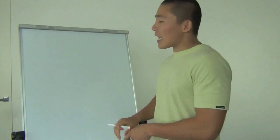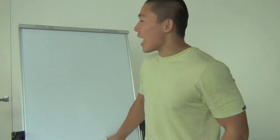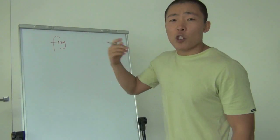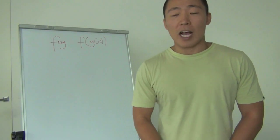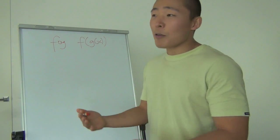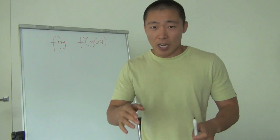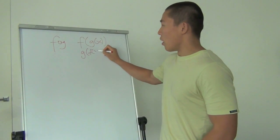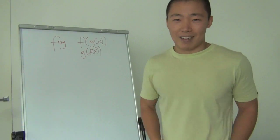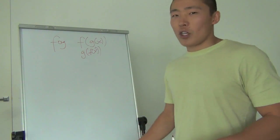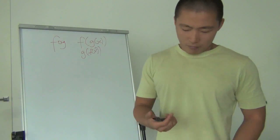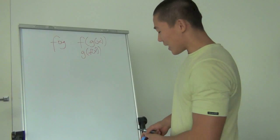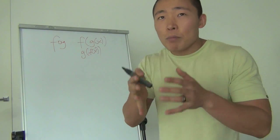How do you know you're dealing with composite functions? The key is when you have 'fog' — not the fog in your brain, but f of g, written as f(g(x)). That is exactly what composite functions are: a function inserted inside another function. There's also the other case: g of f, written as g(f(x)). Some teachers call it the f-machine and g-machine, but let's keep it simple.